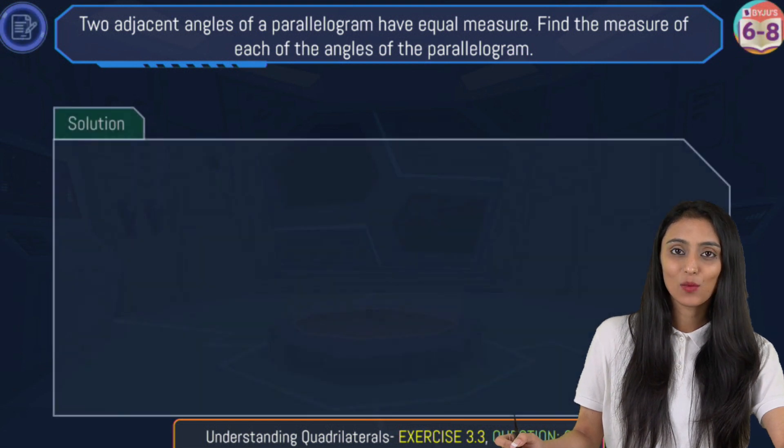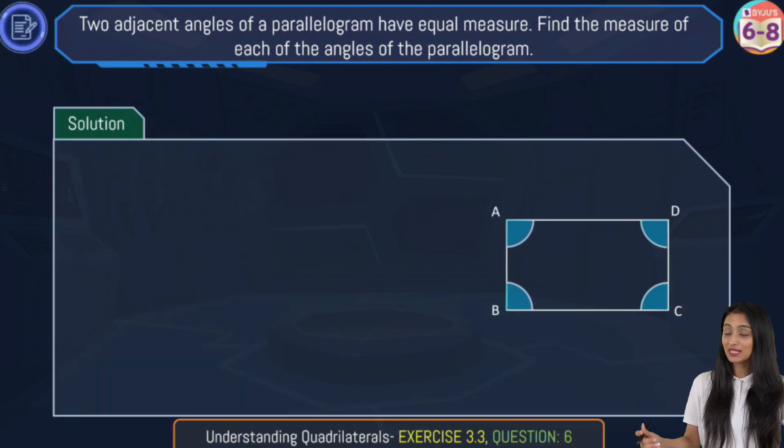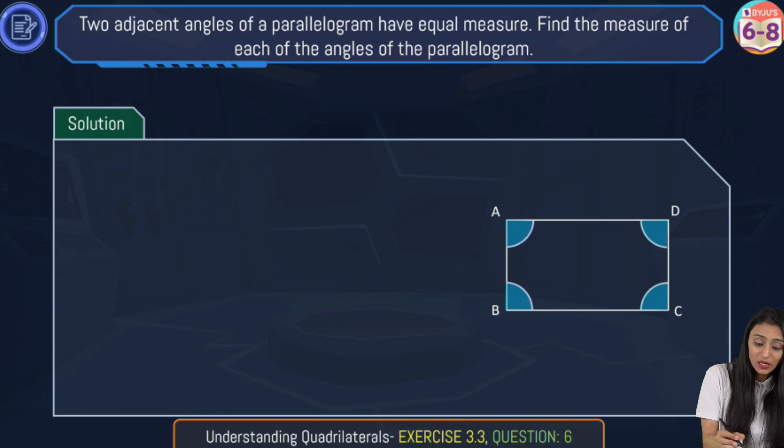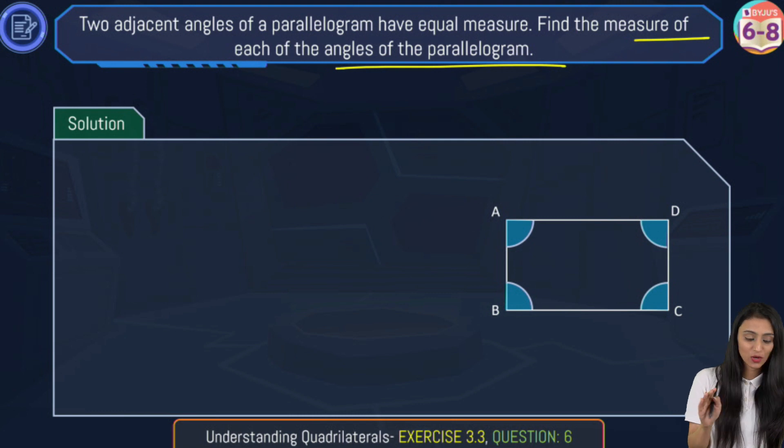So to understand this, what we can do is let's make a parallelogram first, like we have here parallelogram ABCD. Now we need to find out the measure of all the angles. We do not know the measure of any one of them, but we are given that two adjacent angles have equal measure.